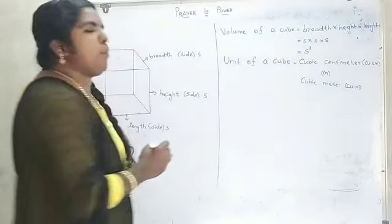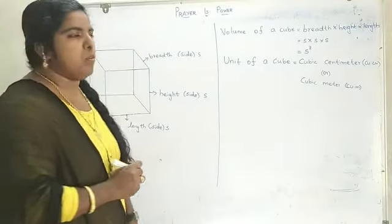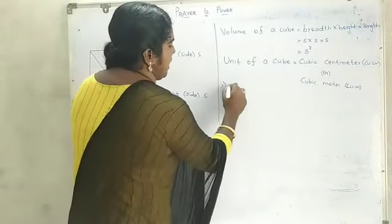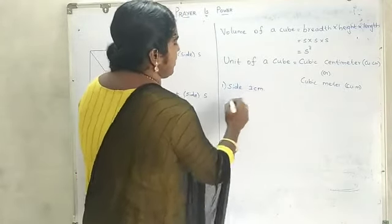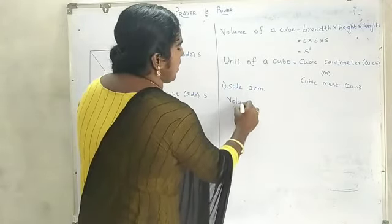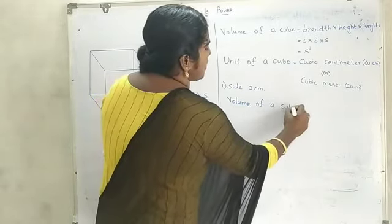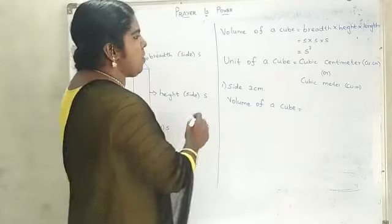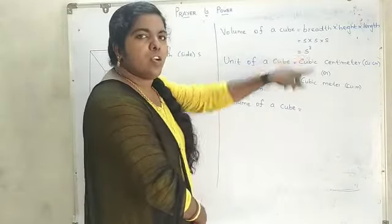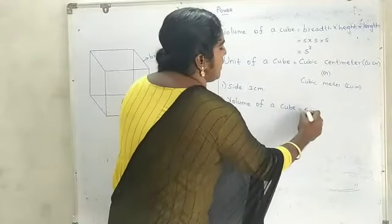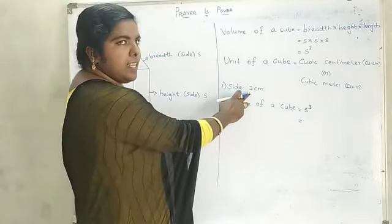Now we are going to solve one example. Find the volume of a cube whose side is 3 cm. Let's see — the volume of a cube is equal to S cube, as we already learned. Here S means side, and our side is 3 cm.